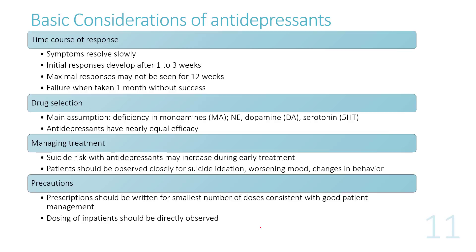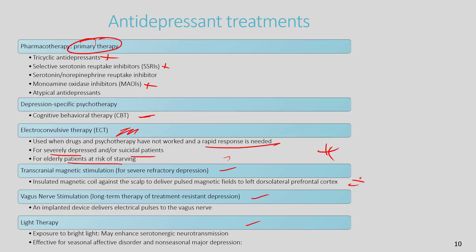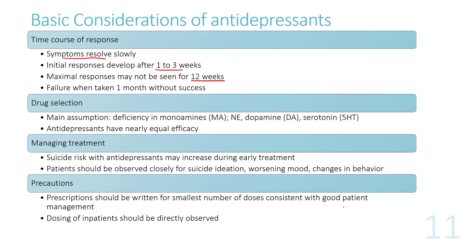Basic considerations of antidepressants: like antipsychotics, symptoms resolve slowly. Initial responses develop after one to three weeks, maximal responses may not be seen for three months. The chemical basis of depression lies in a deficiency of monoamines — norepinephrine, dopamine, and serotonin — so drugs used to treat depression increase the effects of these neurotransmitters.